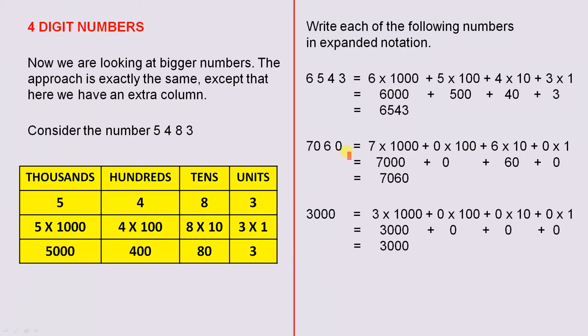7,060. 7 times 1,000 plus 0 times 100. See, of course, there's a 0 in the hundreds column. 6 times 10 plus 0 times 1. Of course, there's a 0 in the ones column. 7,000 plus 0 plus 60 plus 0. 7,060.